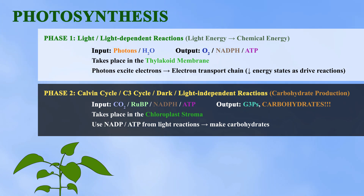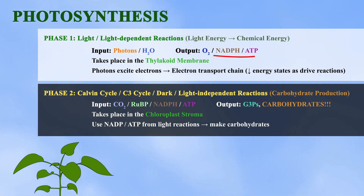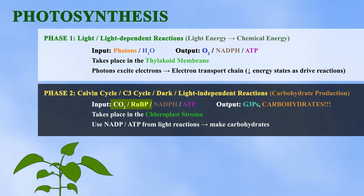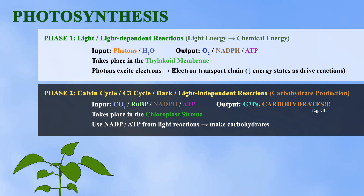Meanwhile, the light-independent reactions, often referred to as the Calvin cycle, involve the input of the high-energy molecules produced in the first phase, as well as carbon dioxide and RUBP, to produce carbon-based molecules the plant can use, such as glucose. These reactions take place in the chloroplast stroma.